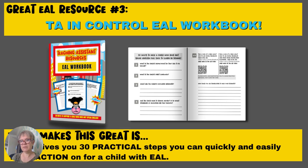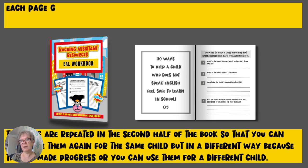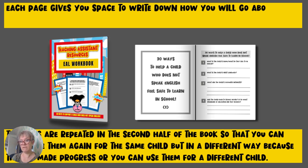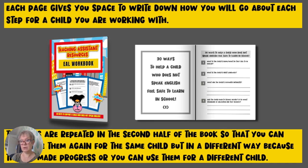Great EAL resource number three is my TA in Control EAL workbook. What makes this great is that it gives you 30 practical steps you can quickly and easily take action on for a child with EAL — I've done the thinking for you. Each page gives you space to write down how you will go about each step for the child you are working with. The steps are repeated in the second half of the book so you can use them again for the same child who has made progress, or for a different child entirely.